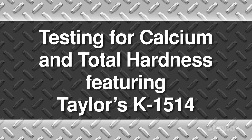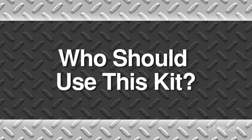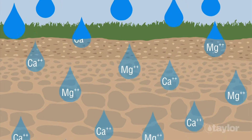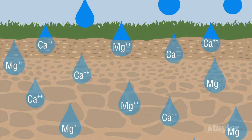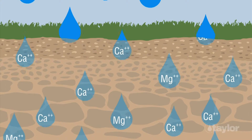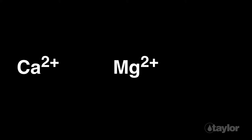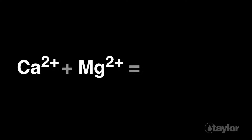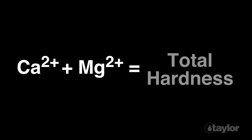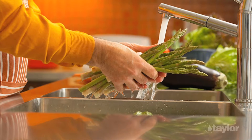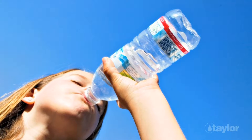Testing for calcium and total hardness featuring Taylor's K1514. Who should use this kit? When water percolates through rocks and soil, it picks up minerals such as calcium and magnesium. The sum of these calcium and magnesium ions present in water constitutes what is considered total hardness. Although hard water is safe for cooking, drinking, and other household purposes, high levels can cause serious problems.